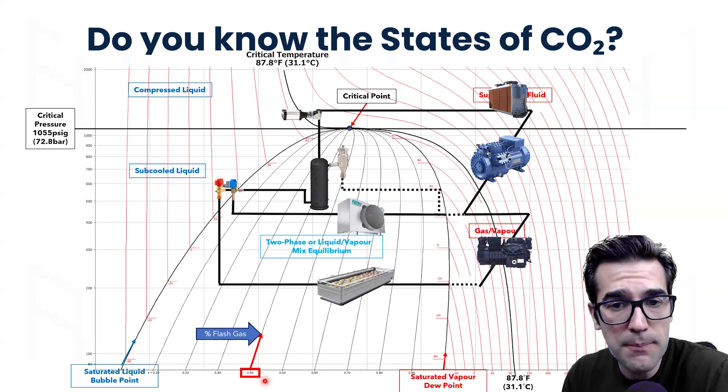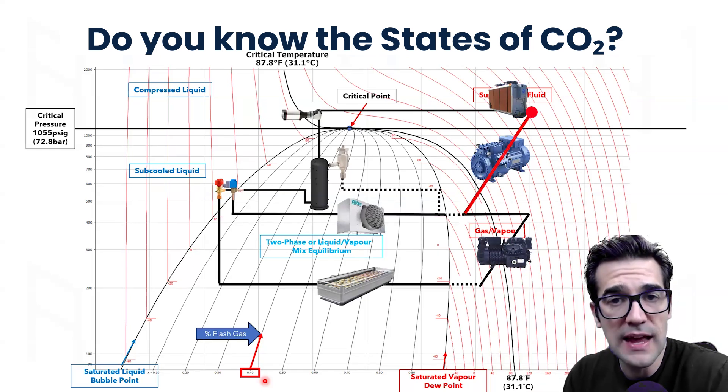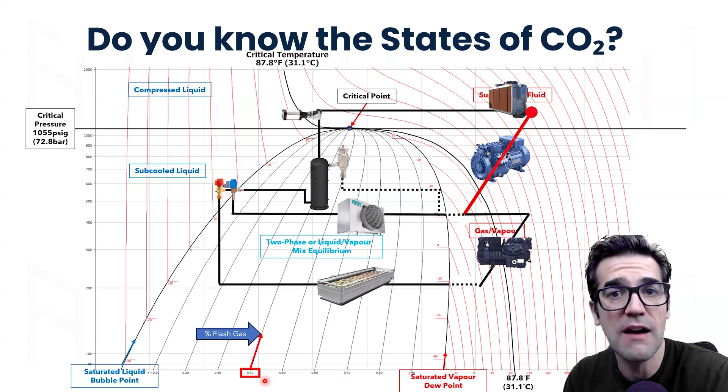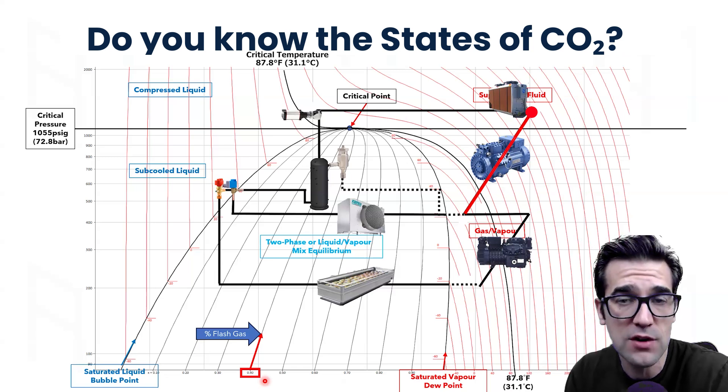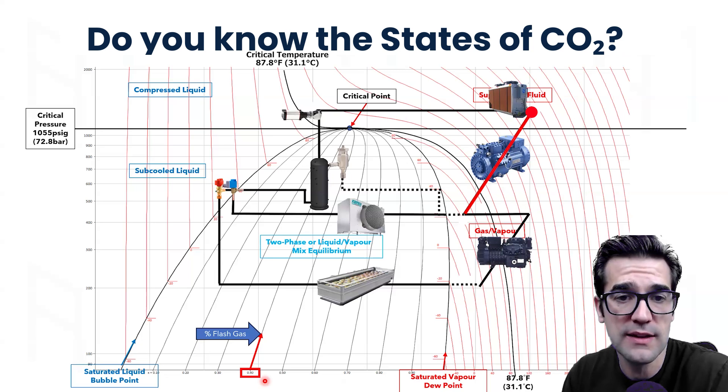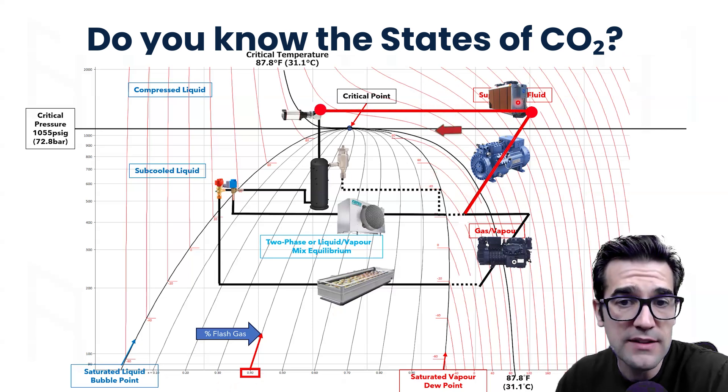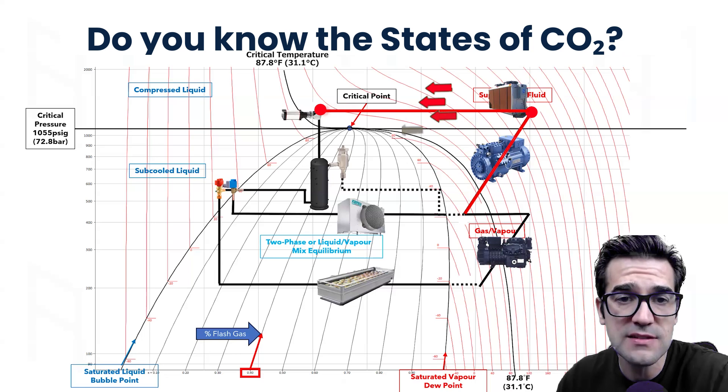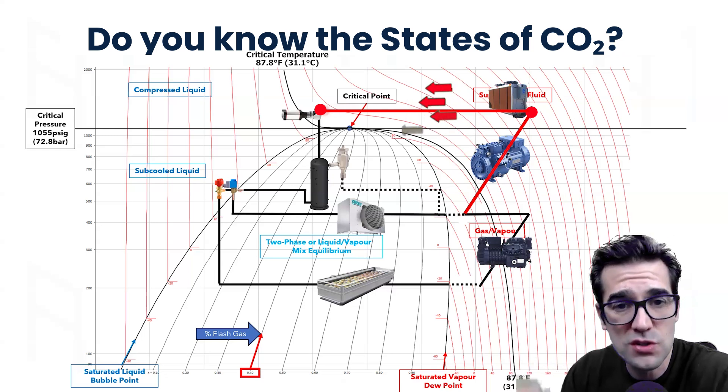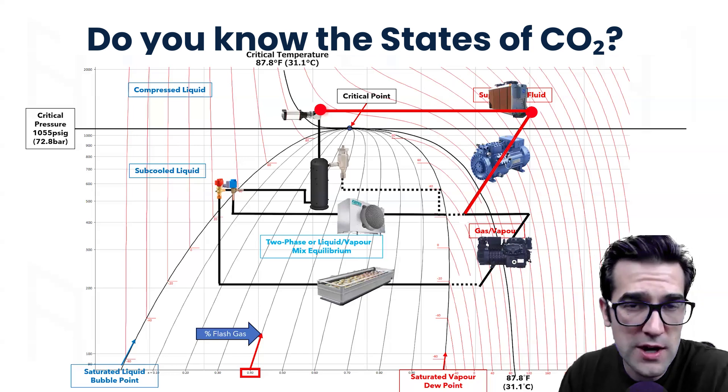How that medium temp compressor is running in this application. When it compresses that vapor, that gas vapor CO2, a supercritical fluid is leaving that compressor, traveling down the discharge line to the gas cooler condenser. As it travels through the gas cooler condenser, a fluid droplet comes to this high pressure valve because we're still above the critical temperature and the critical pressure.